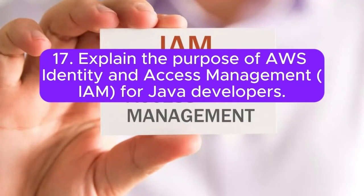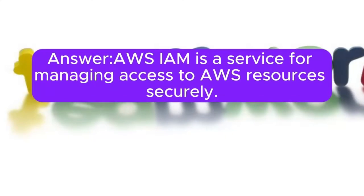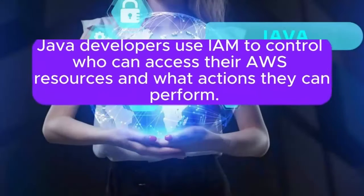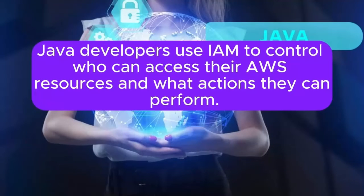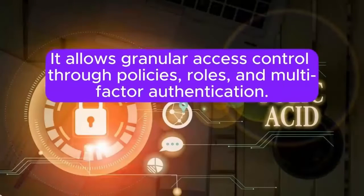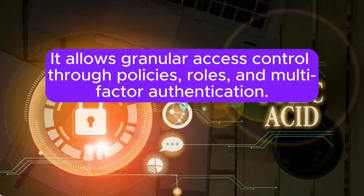Question 17: Explain the purpose of AWS Identity and Access Management IAM for Java developers. AWS IAM is a service for managing access to AWS resources securely. Java developers use IAM to control who can access their AWS resources and what actions they can perform. It allows granular access control through policies, roles, and multi-factor authentication.